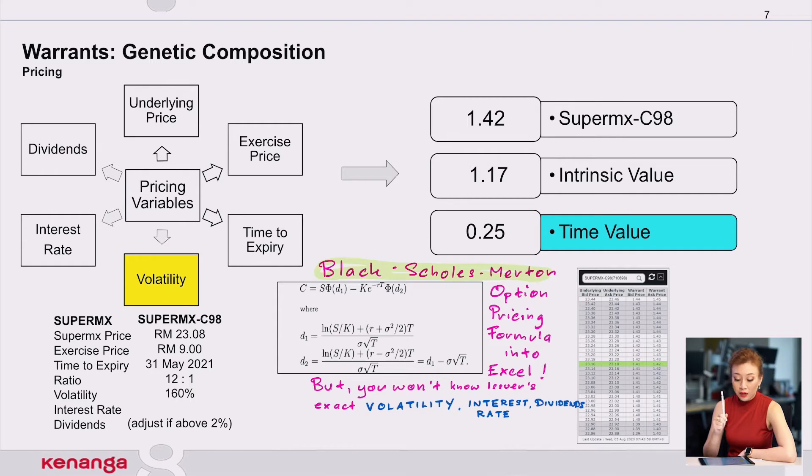So you're not sure exactly what the issuer puts for dividends, you're not sure what interest rate they use, you don't know what the volatility is. So your cake is, you know what goes into the cake, but you don't know what proportion goes into it.